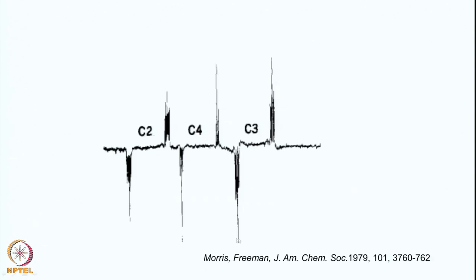Here is an experimental example — this was the very first INEPT data recorded, from Morris and Freeman, published in 1979 in the Journal of the American Chemical Society. You can see three antiphase doublets: negative-positive, negative-positive, negative-positive. There is also fine structure visible due to carbon-carbon couplings that evolve during the detection period. The three carbons C2, C3, and C4 are coupled to each other, resulting in this fine structure, and each carbon shows an antiphase doublet.